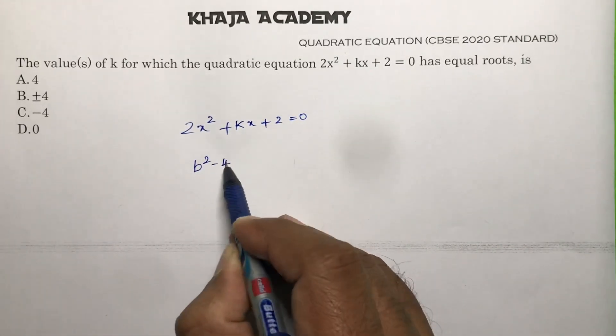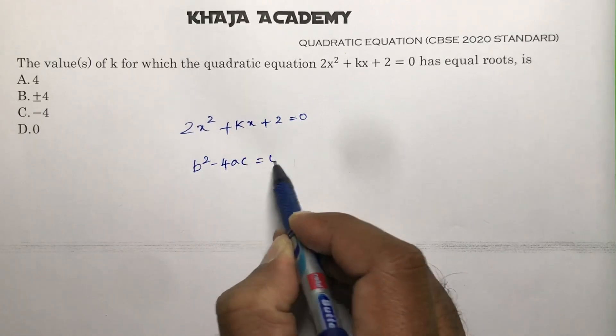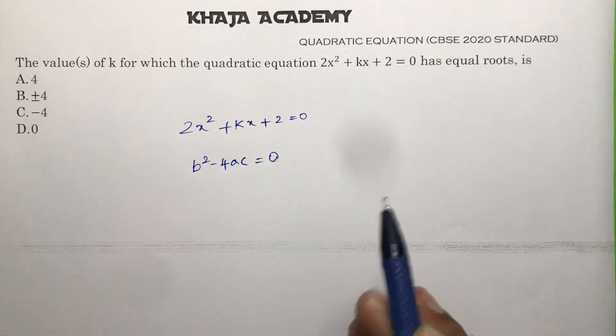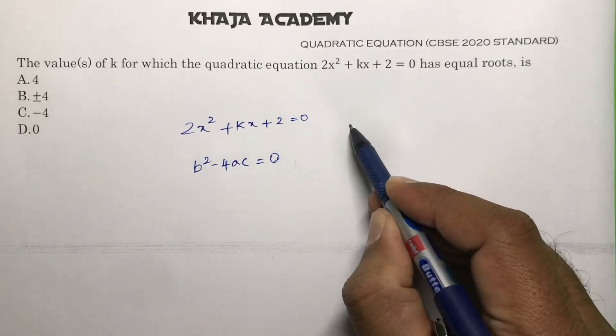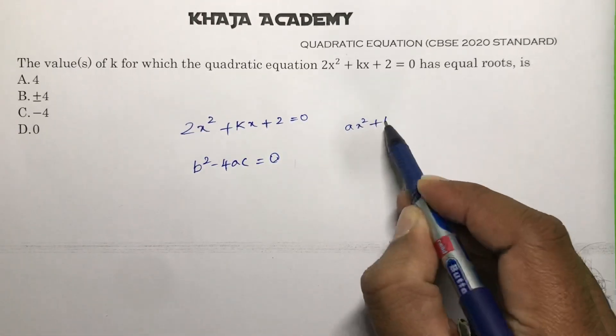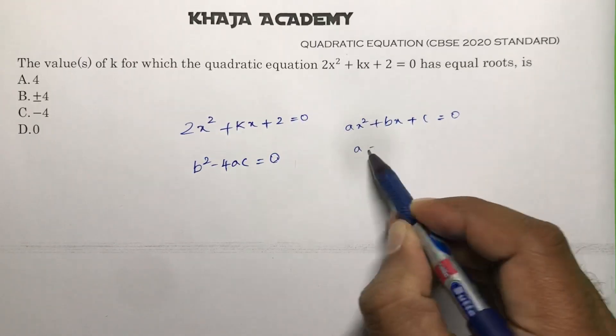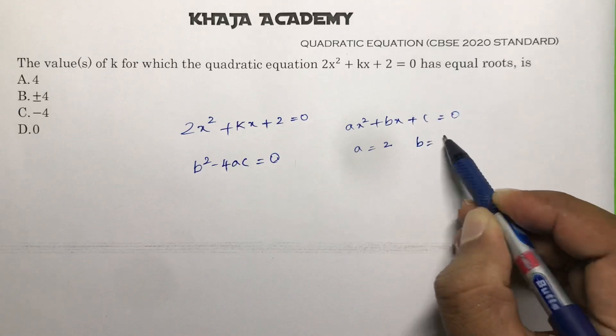The discriminant value will be 0. If roots are equal, b² - 4ac = 0. Comparing this with the standard form ax² + bx + c, the value of a is 2, b is k, and c is 2.